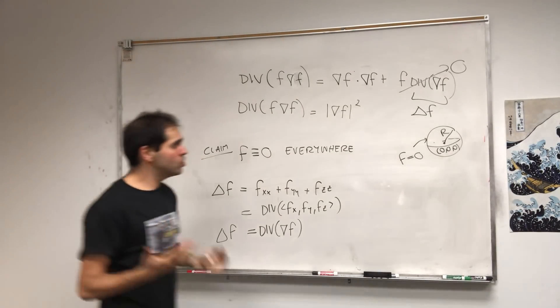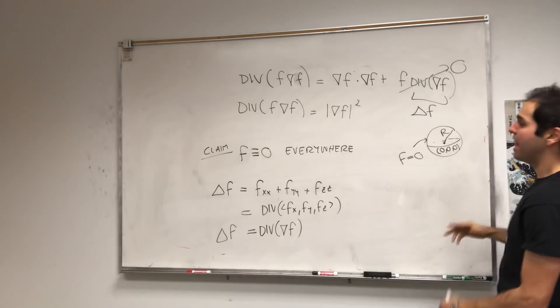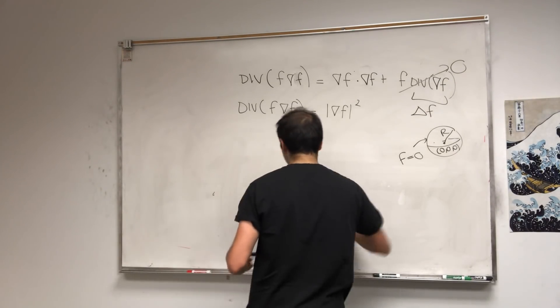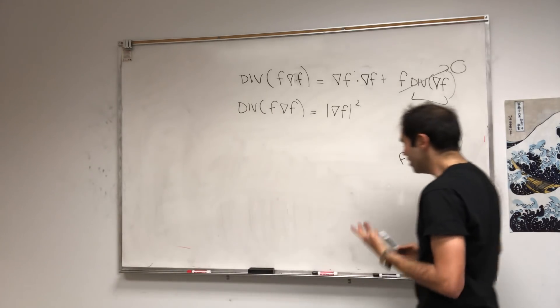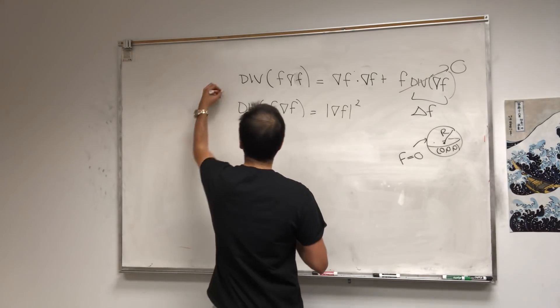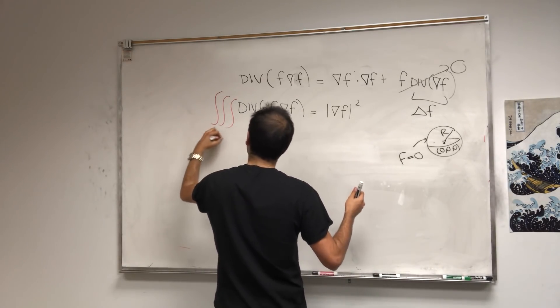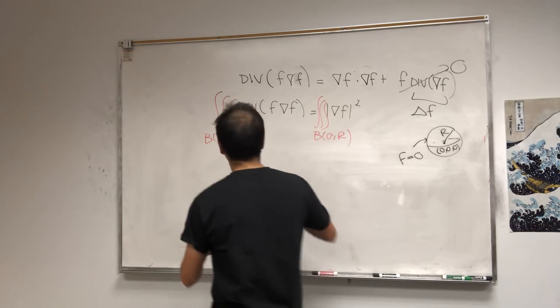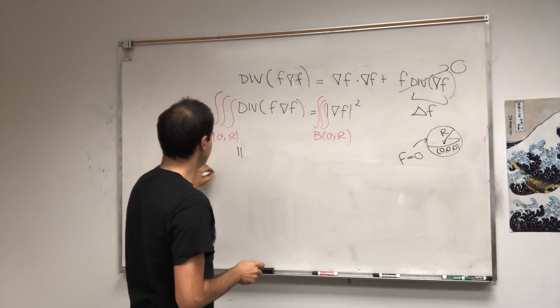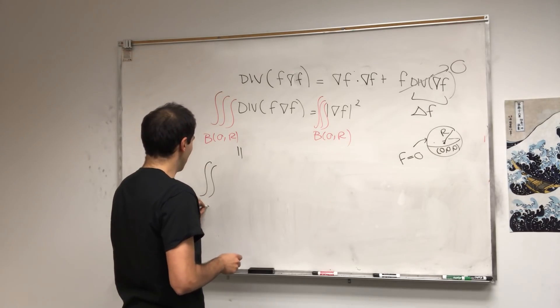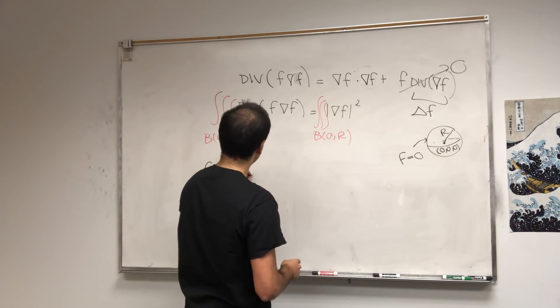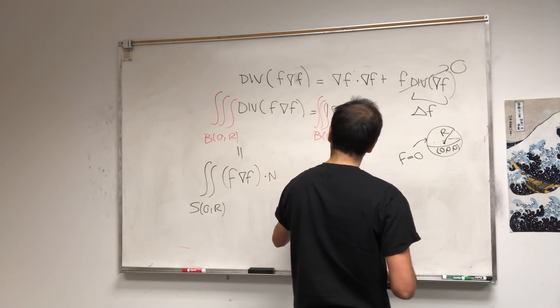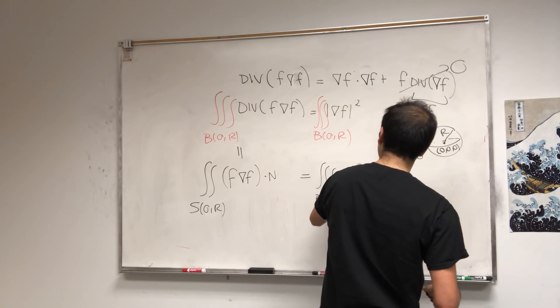Now, there's one more thing we have. We have not used the fact that f is zero on the boundary. So it would be great if from this equation we could get something on the boundary. And look, this is the divergence. So the only thing we can do is use the divergence theorem. So let's integrate that over that ball. Then what do we get? By the divergence theorem, it equals the surface integral over the sphere of f gradient of f dotted with the normal vector. And that equals the triple integral over the ball of the length of gradient of f squared.